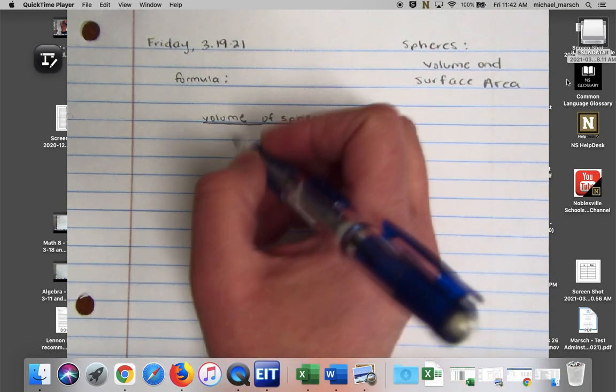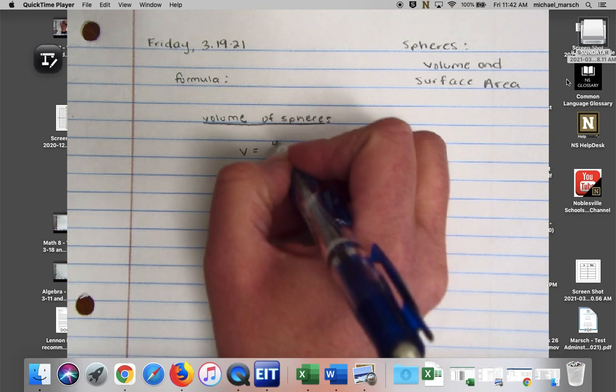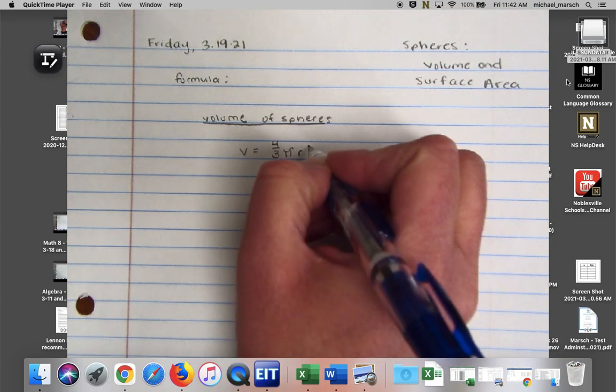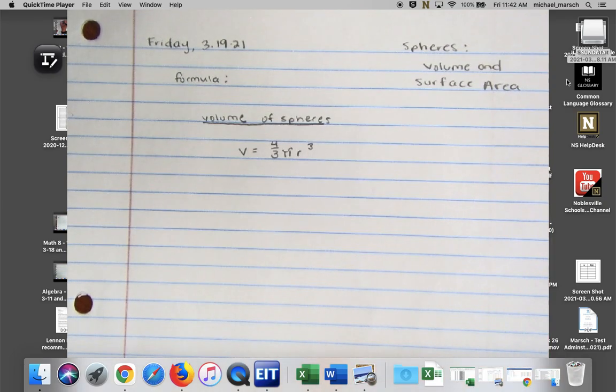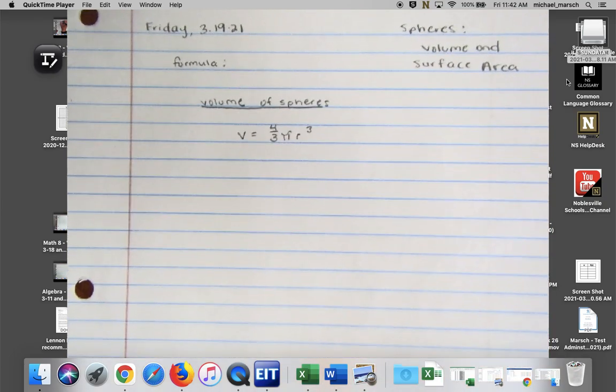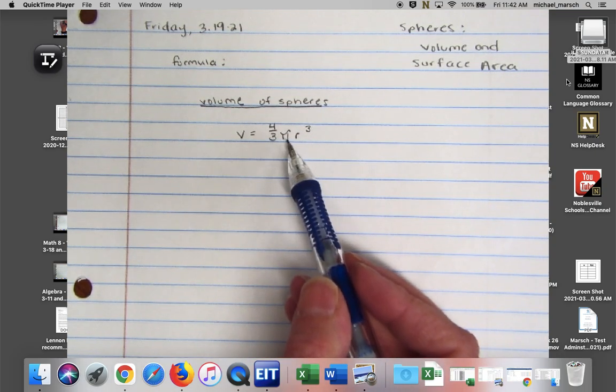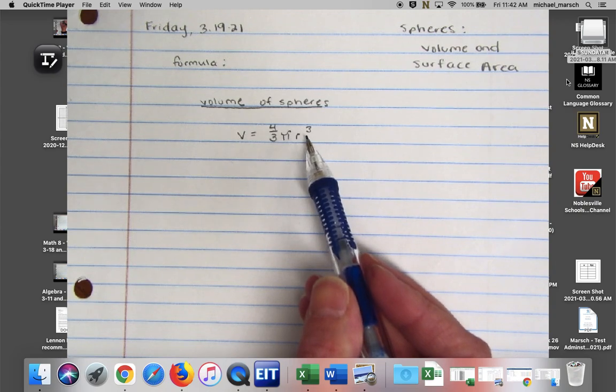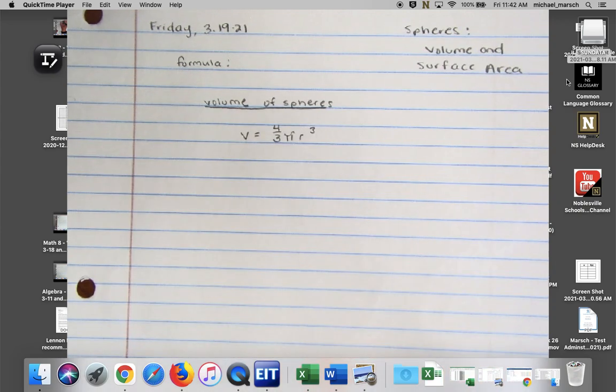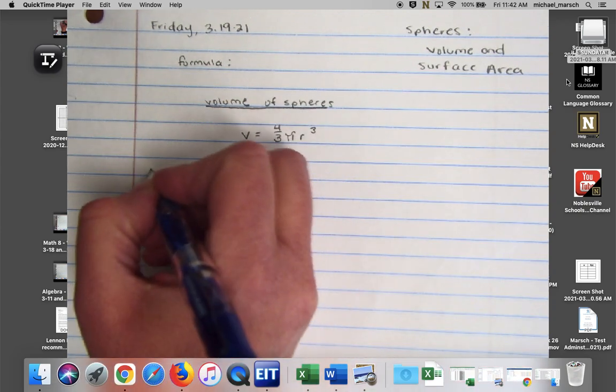Okay, so it's pretty easy. Volume equals four-thirds pi r cubed. Who came up with this? I don't know. Right, so we know V is for volume, pi is 3.14, R is radius. Okay, all right. So we'll just jump into a couple examples.